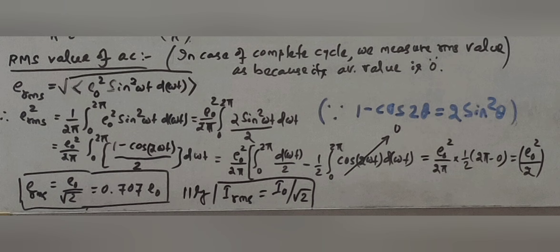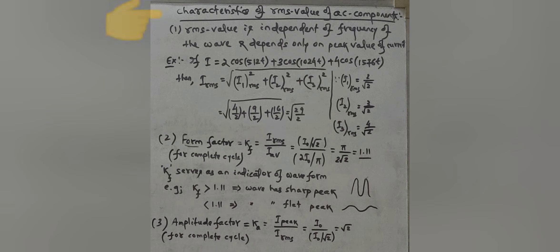In the same way, i_RMS = i₀/√2. This is how we find the RMS value of AC. An important characteristic of the RMS value of an AC component is that it is independent of the frequency of the waves and depends only on the peak value of the current. For example, if i = 2cos(512t) + 3cos(1024t) + 4cos(1576t), these three components i₁, i₂, i₃ are added to get the resultant current i.